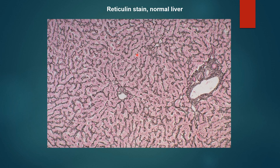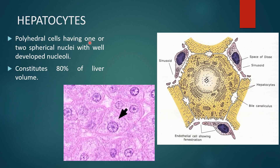A special reticulin stain is used to show the connective tissue of the liver since reticular connective tissue is present in minimal amounts. The reticulin stain shows minimal connective tissue including that in the portal area. Hepatocytes are polyhedral cells having one or two spherical nuclei with well-developed nucleoli, constituting 80% of the liver by volume. They may sometimes have two nuclei, and the nucleus is centrally located.